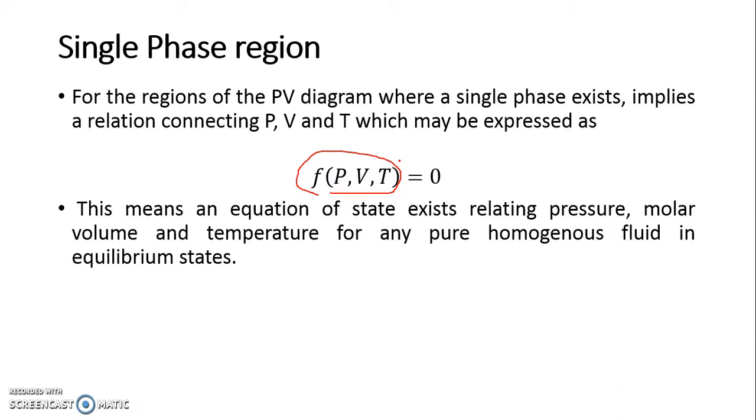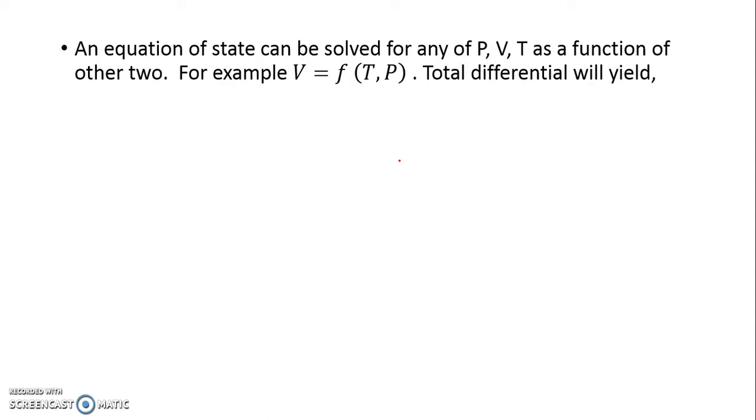The relationship between P, V, and T is known as equation of state because it tells you which state the fluid is existing. The simplest such equation of state is the ideal case, which is PV equals RT. Let us try to develop an equation for a liquid phase or any fluid.